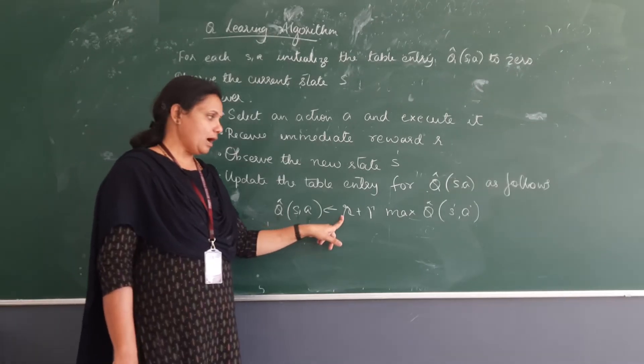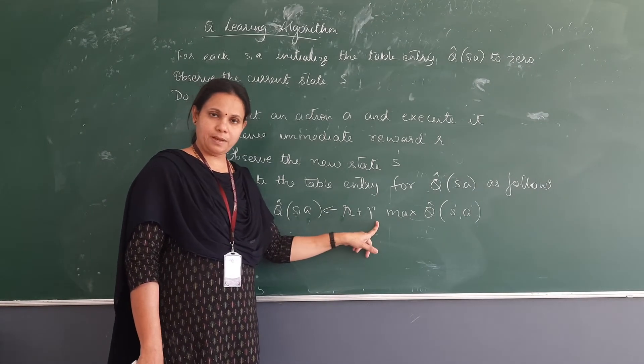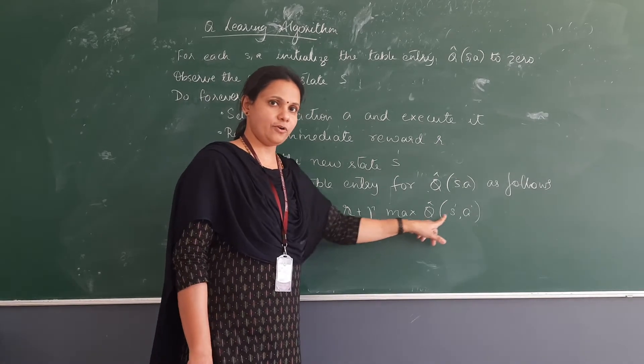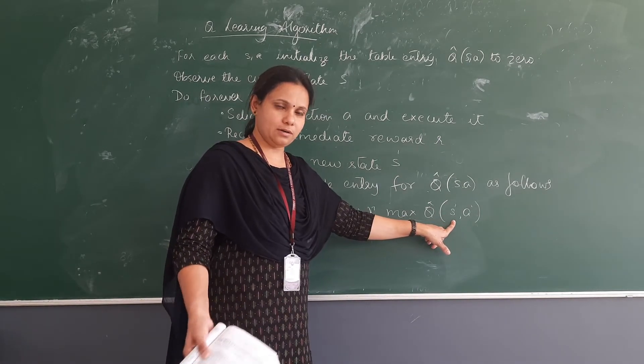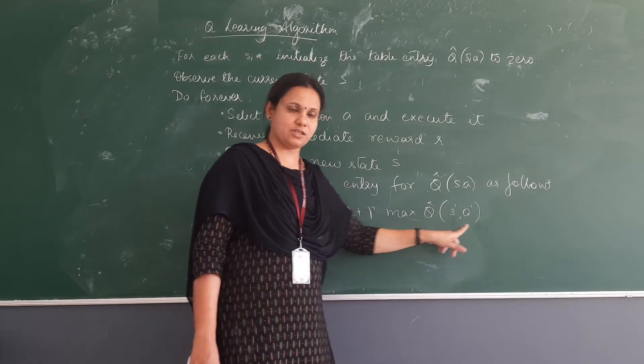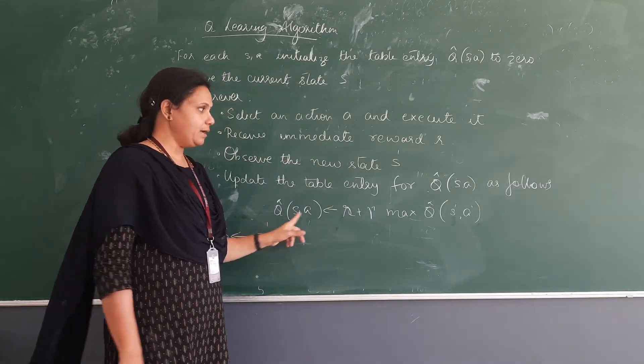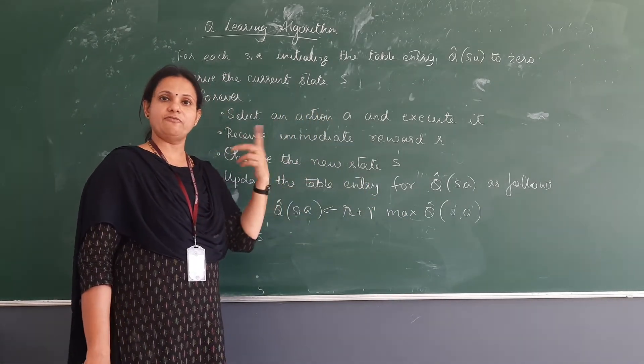Q(state, action) is equal to R(state, action) plus gamma into maximum of all the current state and all the possible actions. So this formula we applied and updated the Q-matrix after each iteration.